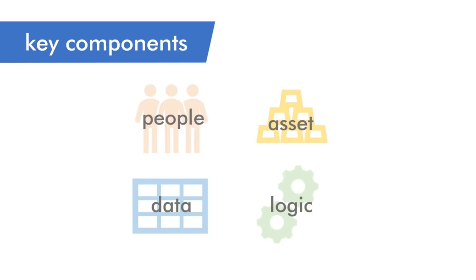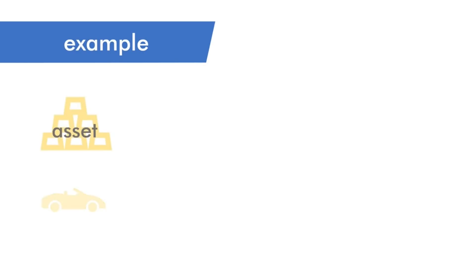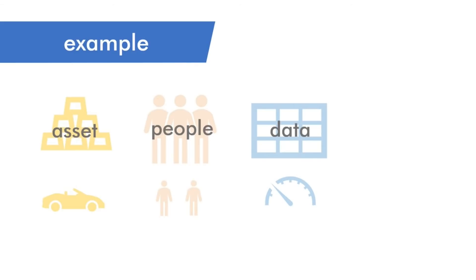Bringing this back to our bill of sale example: the asset is the car, the people involved are the buyer and the seller, the data includes the date of sale, the price of the car, and the odometer reading (mileage), and the logic covers the steps, the sequence of events, and what happens when particular conditions are met or not met.